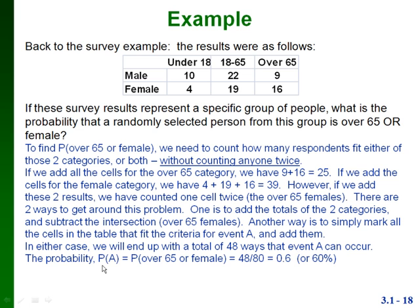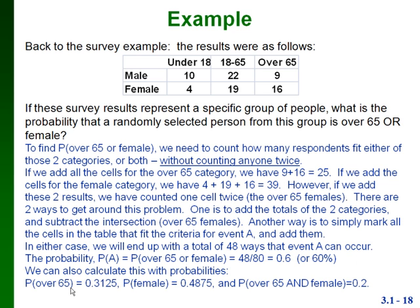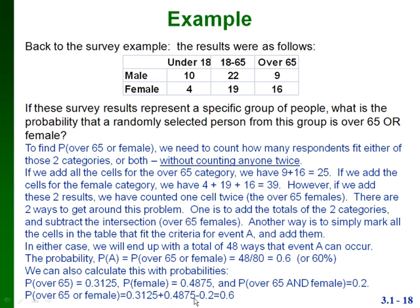So the probability that the respondent is over 65 or female is 48 over the total number of respondents, which was 80 — giving us 0.6, or 60 percent. We can also calculate this using the addition rule with probabilities: P(over 65) = 0.3125, P(female) = 0.4875, and P(over 65 and female) = 16/80 = 0.2. Applying the addition rule: 0.3125 plus 0.4875 minus 0.2 gives us 0.6 again.